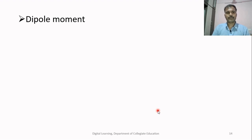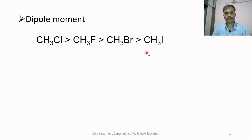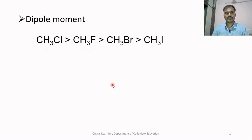As the negative inductive effect increases, dipole moment also increases. Consider CH3Cl, CH3F, CH3Br and CH3I. The dipole moment of the C-Cl bond is greater than C-F, greater than C-Br, greater than C-I. Although fluorine is more electronegative and shows a greater negative inductive effect, CH3F has a lesser dipole moment than CH3Cl due to the smaller size of fluorine.